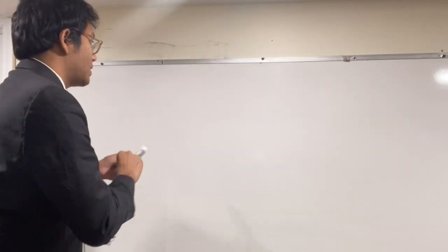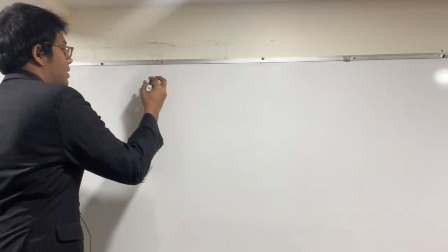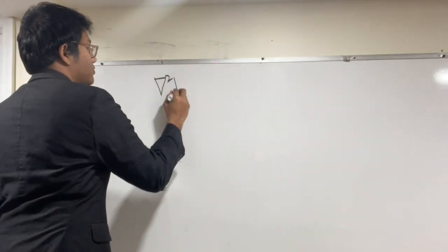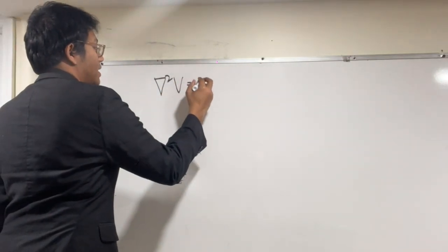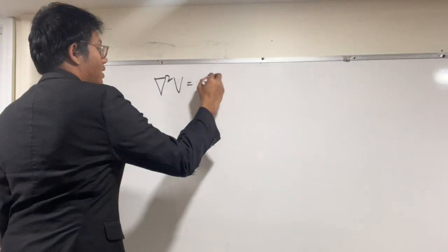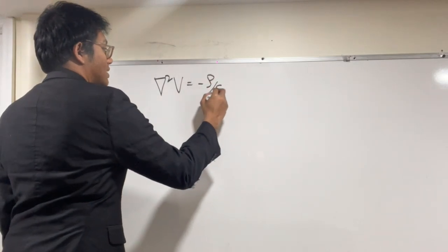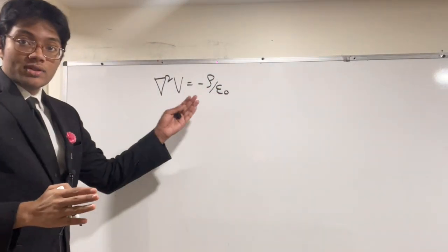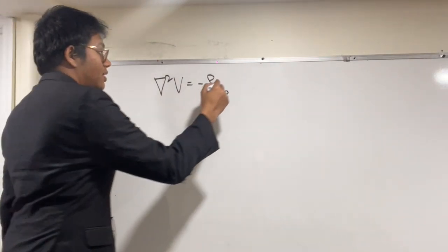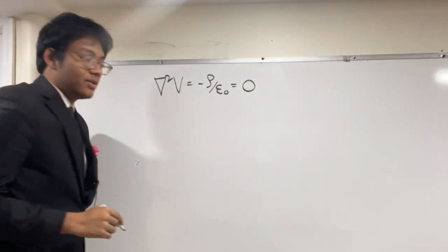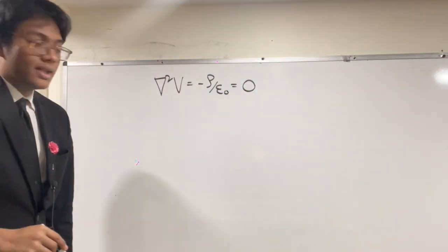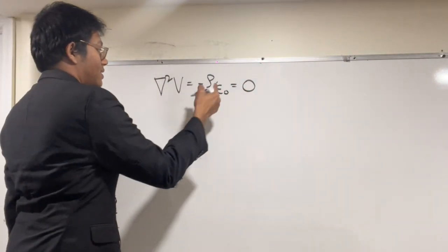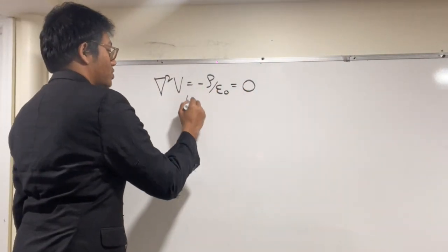Recall that the Laplacian is applicable in scenarios where the volume charge density is zero. In other words, the Laplacian is simply Poisson's equation but with zero volume charge density. This is Laplace's equation; this is Poisson's equation.